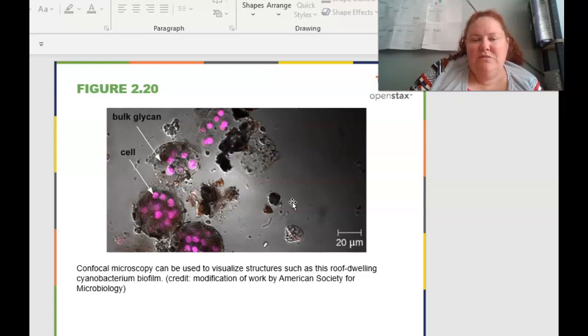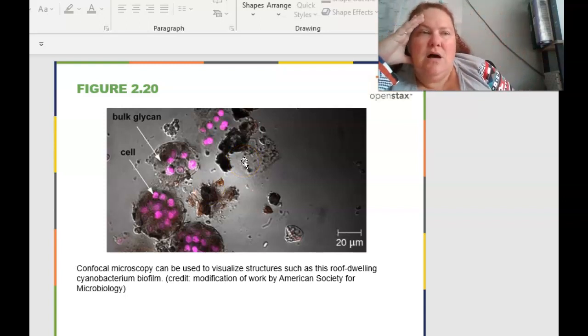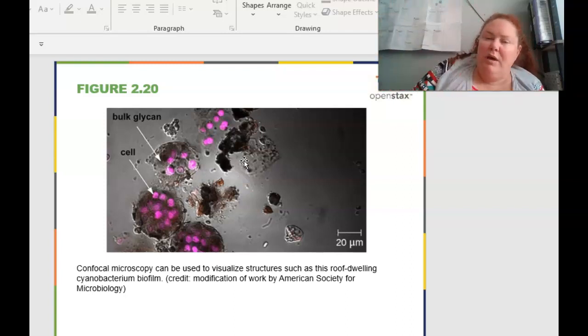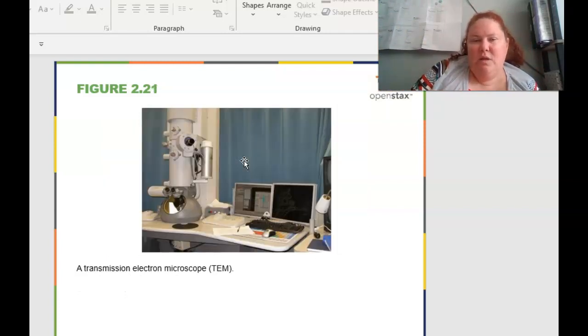Confocal microscopy can be used to visualize structures such as this rift-dwelling cyanobacterium biofilm. And so basically the whole purpose of this whole chapter is to show you the different types of microscopes we have, different ways that we can look at different microorganisms, either with a naked eye, with simple stains, with more complex antibody stains. But then this is how we know what we know with science.